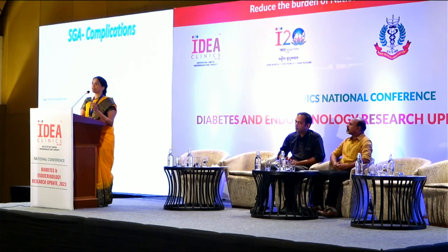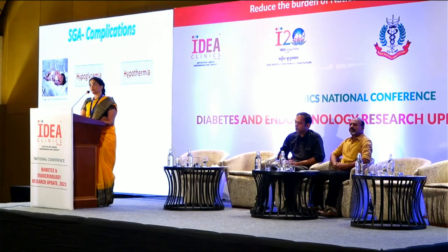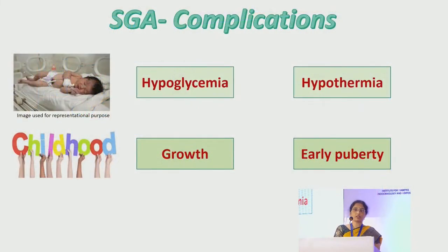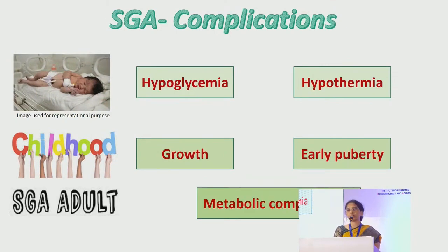Complications in a neonate born SGA include hypoglycemia, hypothermia, and hyperbilirubinemia in the neonatal period. In childhood, growth is affected and most SGA children have early puberty. In adulthood, it is now well established that SGA children have very high risk of metabolic disease — including diabetes, insulin resistance, atherosclerotic vascular disease, and obesity. Therefore, SGA children should be under regular follow-up and need special care.